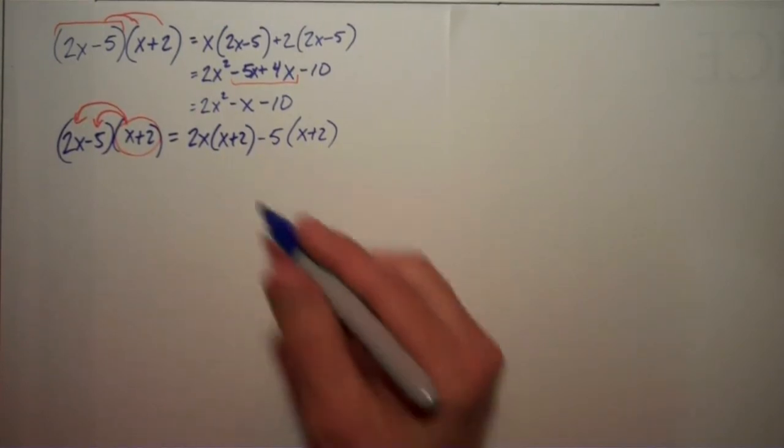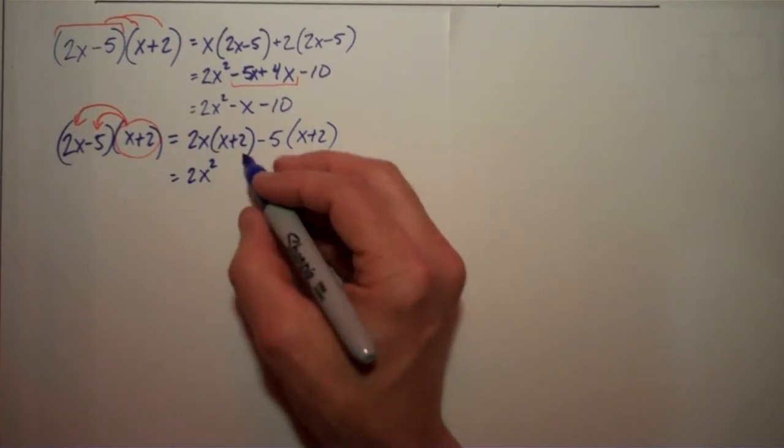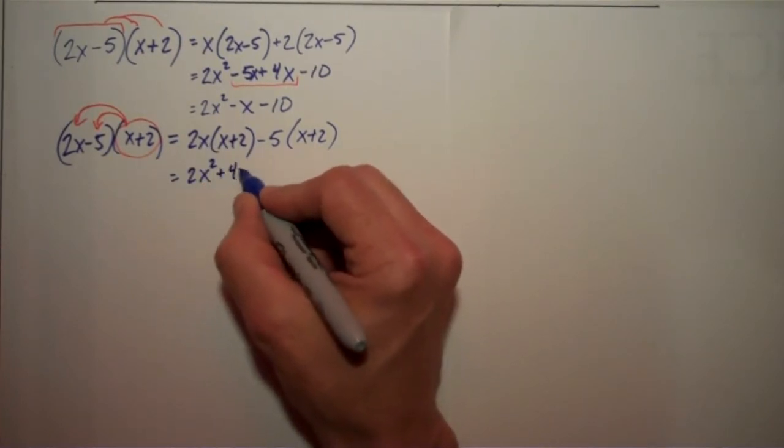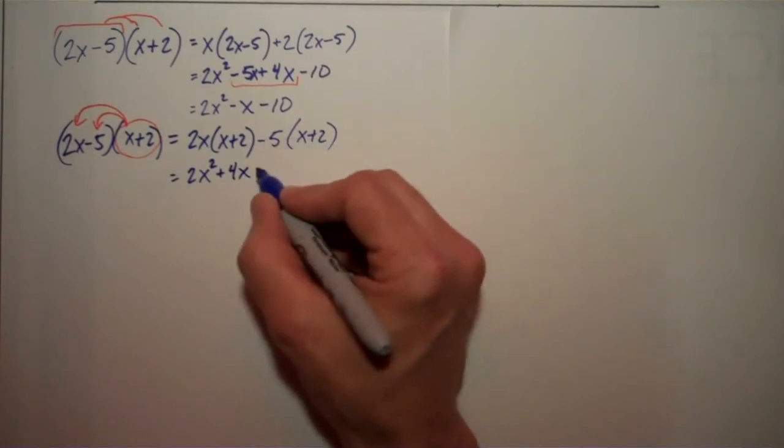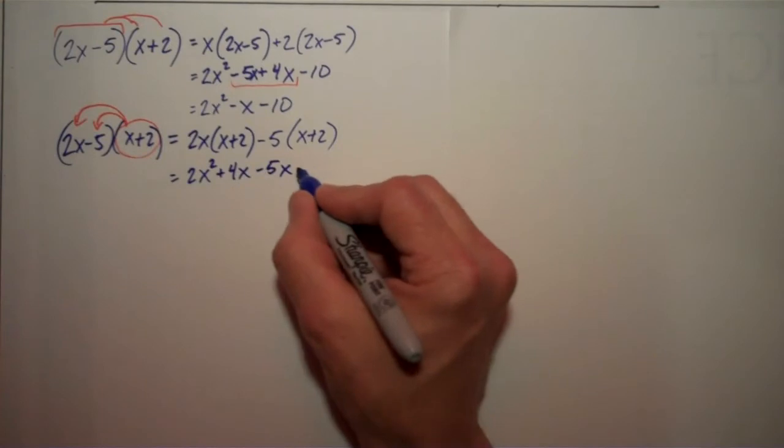All righty. 2x times x, 2x squared. 2x times 2, 4x. Negative 5 times x is minus 5x. And negative 5 times 2 is minus 10.